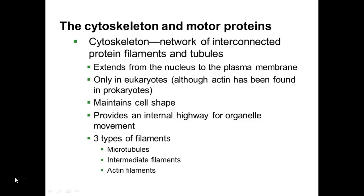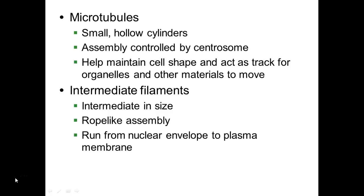We find the cytoskeleton in eukaryotes to give the cell shape, although actin, one of the components of eukaryotic cytoskeletons, has been found in prokaryotes and is also thought to help with cell shape. The cytoskeleton also acts like a highway inside the cell for organelles to move, and there are three types of filaments that make up the cytoskeleton.